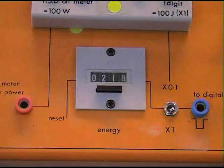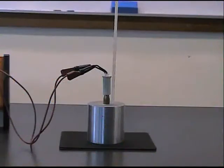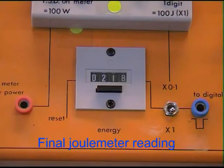When the temperature has risen by about 10 degrees Celsius, switch off the heater. Wait for a short while and record the highest temperature reached and the final joulemeter reading.